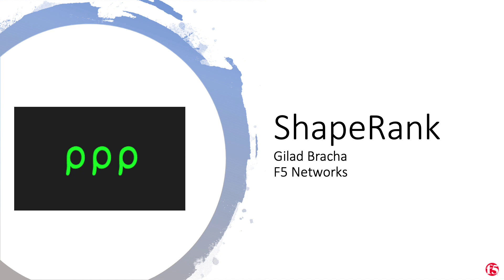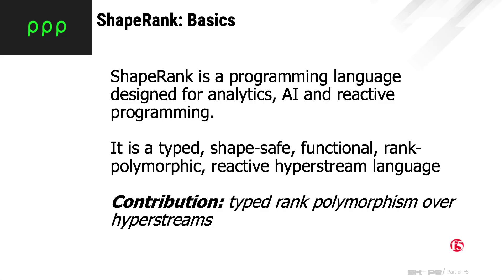In this talk, I'll be presenting ShapeRank, a new programming language we're developing at F5. ShapeRank is designed for analytics, machine learning, and reactive programming. Its main contribution is the combination of rank polymorphism, streams, and static typing — a unique and new combination with interesting properties.